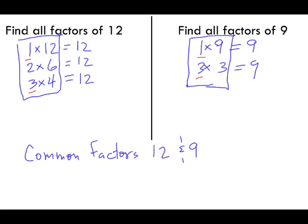If we look at other ones, 3 divides into both of them. So the common factors of 12 and 9 are the numbers 1 and 3. These are two common factors of the numbers 12 and 9.